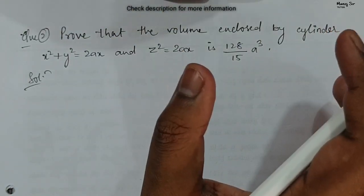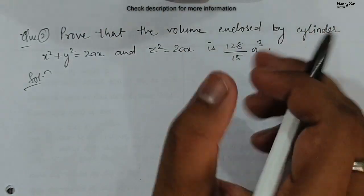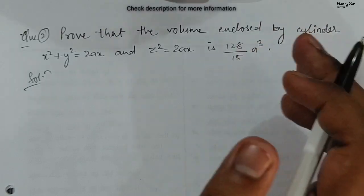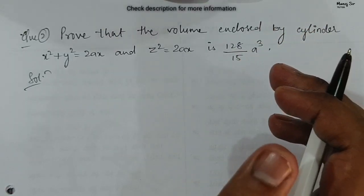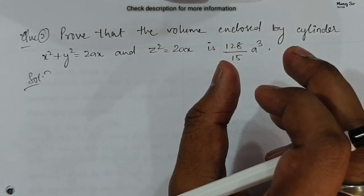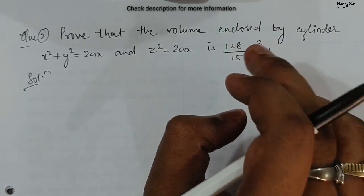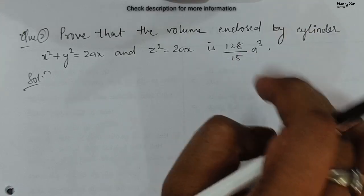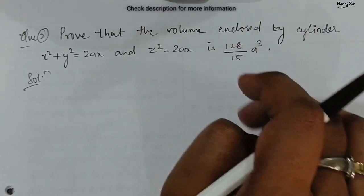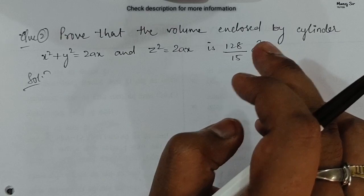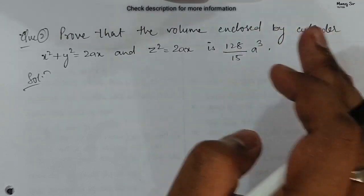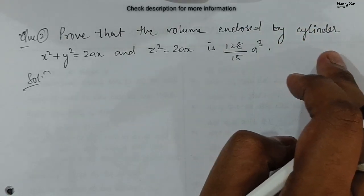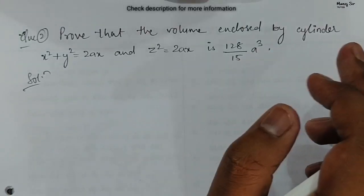In the previous video, that is video number 17, we went through a cylinder whose equation is x² + y² = a² and x² + z² = a². If you take the circle x² + y² = a² and move it along the z-axis, it forms a cylinder. Similarly, if you take x² + z² = a² and move that circle along the y-axis, you get another cylinder.